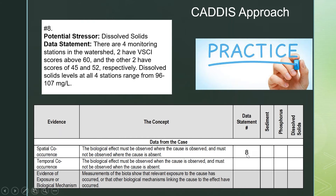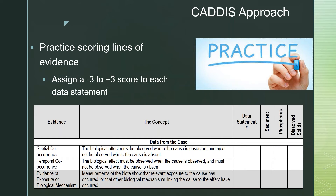So this is data statement eight for spatial co-occurrence, and then we're going to give a score to it for dissolved solids. The second step of your homework is: once you've identified each data statement, you're going to score it. You're going to look at that data statement, and based on what you see there — it's just a small paragraph of data — how would you score that particular line of evidence?